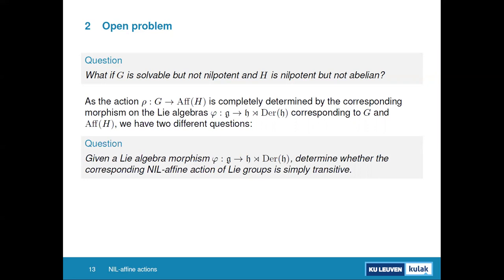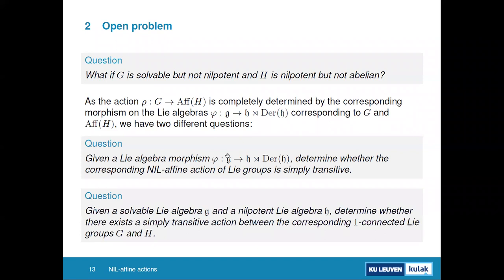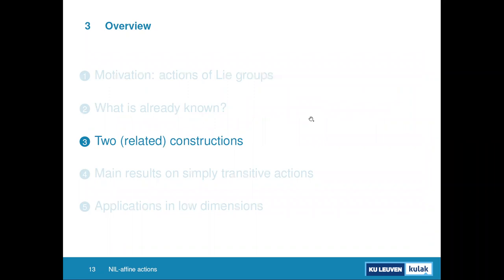We identified two problems to tackle. First: given a morphism from G into the affine group, check whether the corresponding action is simply transitive. Second: given G and H, determine whether there exists a map φ such that the corresponding action is simply transitive.